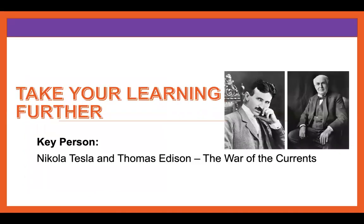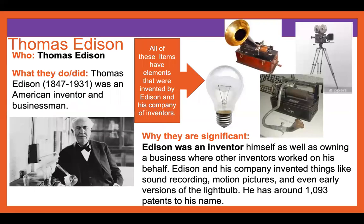We're first going to begin by looking at some key people: Nikola Tesla and Thomas Edison. Thomas Edison was born in 1847 and died in 1931. He was an American inventor and businessman. All of the images you can see have elements that were invented by Edison and his company. Edison was an inventor himself and also owned a business where other inventors worked on his behalf. His company invented things like sound recording, motion pictures, and early versions of the light bulb. He has around 1,093 patents to his name.